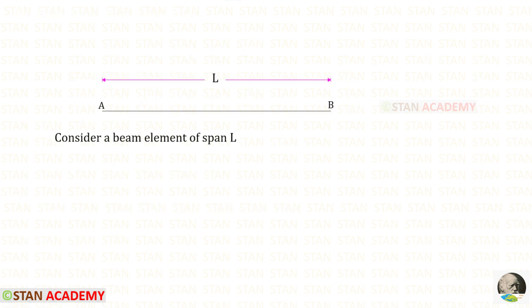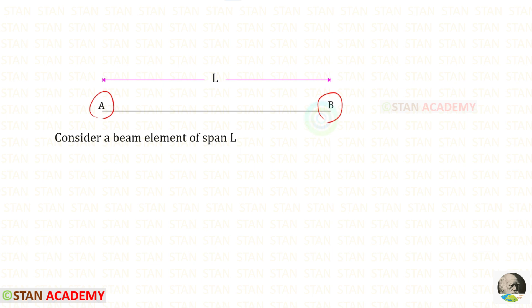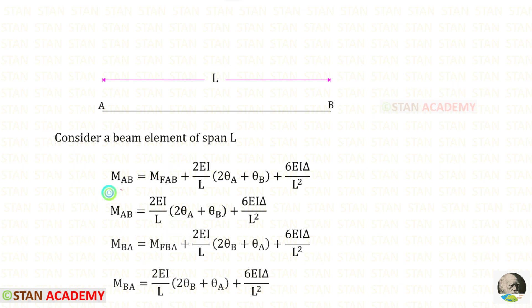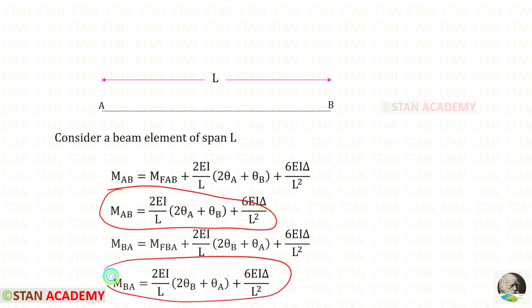Let us consider a beam element AB of span L. In the beam element both of the ends are free. As we saw just before, we are going to use these two equations. You can see that in the beam element there is no load, so the fixed end moments will be zero. M of AB will become zero and M of BA will become zero. So this is the equation we are going to use to find the moment MAB, and this is the equation we are going to use to find MBA.